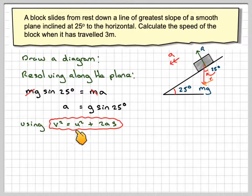So using v squared is equal to u squared plus 2as. We need to find the speed after it has travelled 3 metres. So v squared will be equal to 0, because it starts from rest. Plus 2 times my acceleration, which is g sine 25, times the distance, which is 3.